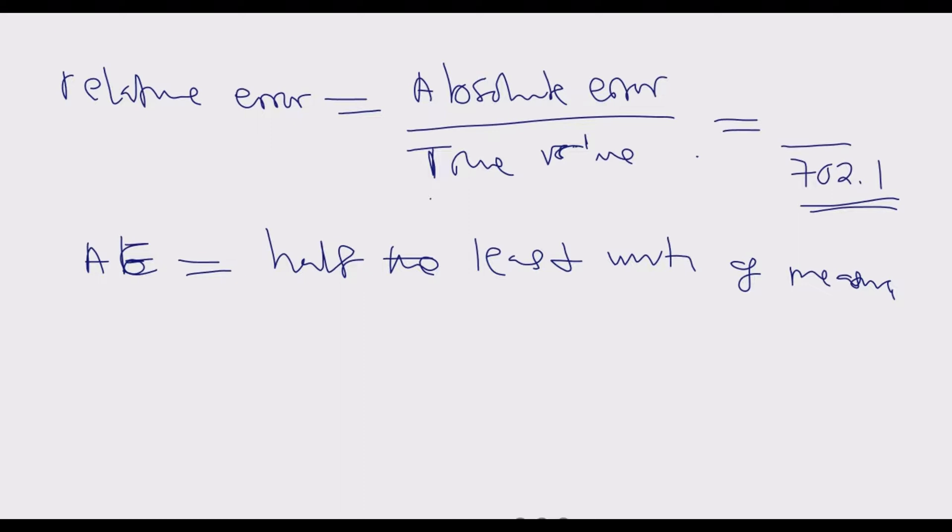We are given 702.1. What's the least unit? The least unit in this case is 0.1. We find half of this, divide by 2, and we end up with 0.05.